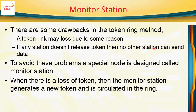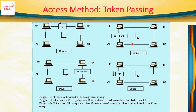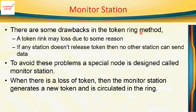An important element of token ring is the monitor station. One drawback of token ring is that a token may be lost for some reason. If any station captures the token and does not release it, no other station can send data. To handle this, a special node called a monitor station is designated. If there is a loss of token, the monitor station detects it and generates a new token to be circulated in the ring.